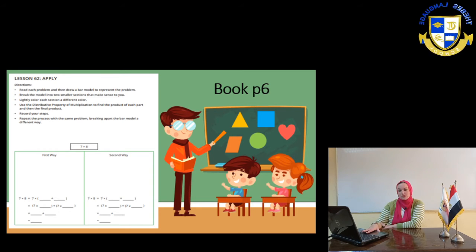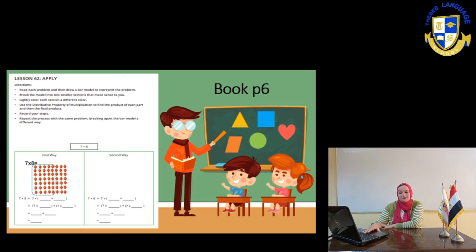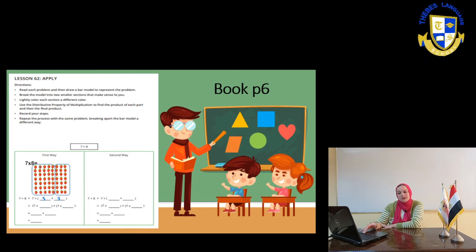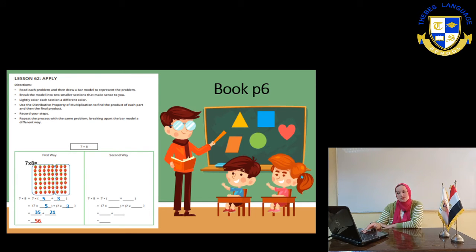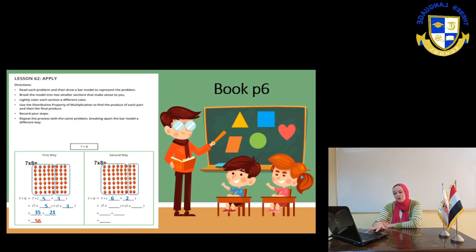The first way: 7 times 8. We have an array to form 7 times 8. We are going to break the 8 into two numbers — 5 and 3. So 7 times 8 will be 7 times 5 plus 3, which means 7 times 5 plus 7 times 3. 7 times 5 equals 35, plus 21, so the result will be 56. Or we can split the 8 into 6 and 2. So it will be 7 times 6 plus 7 times 2, which is 42 plus 14, and the result is also 56.